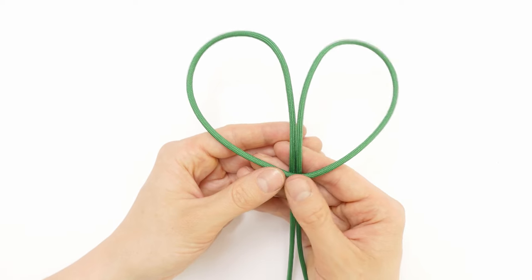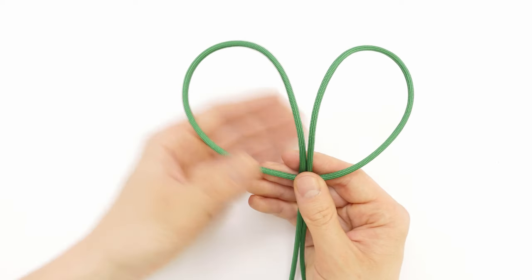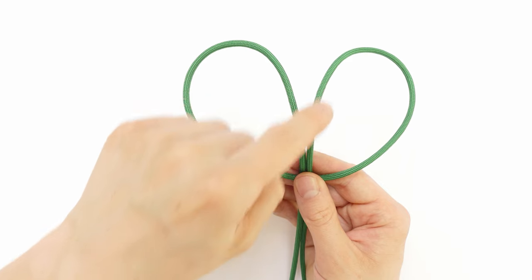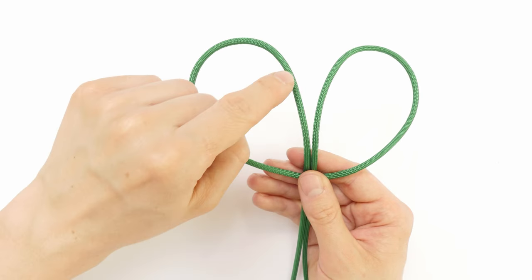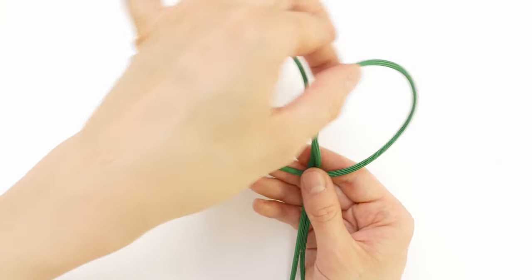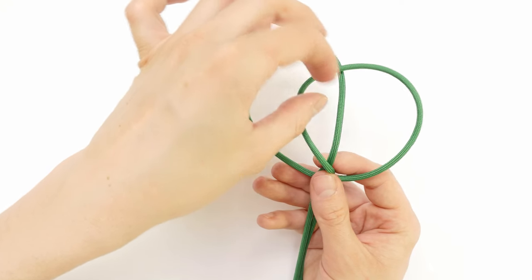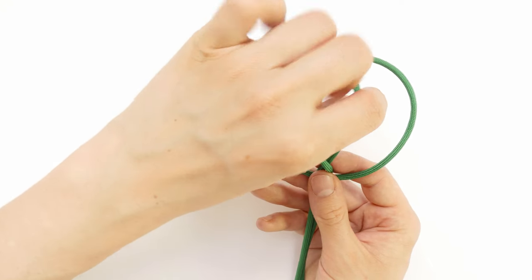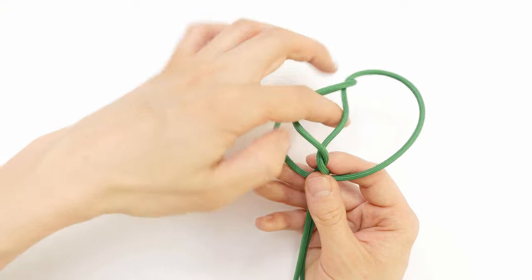Hold your three cords here at the bottom, then pick up this middle right cord and place it over the middle left one. Then pick up the middle right cord again and place it over the middle left one.